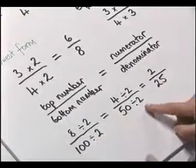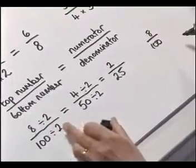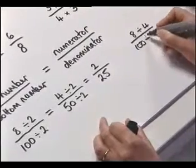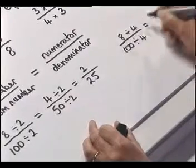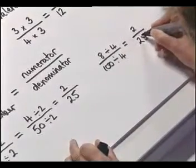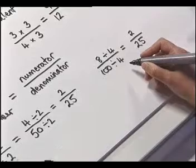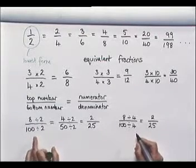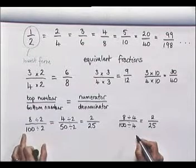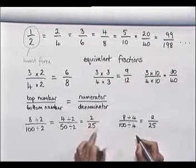Now if we look here, we can see that in fact we could have divided by four straight away, instead of dividing by two twice. That's fine if you noticed that four was a factor of both the numerator and the denominator — you could have gone straight there: eight divided by four is two, and one hundred divided by four is twenty-five. But often with larger numbers it's not always easy to see what the highest common factor is of the numerator and denominator, so often it's easier to work down to smaller numbers and then you can be certain there are no other common factors.